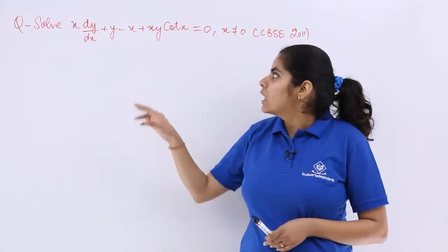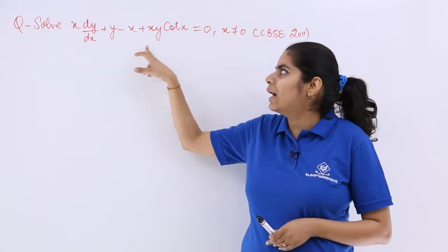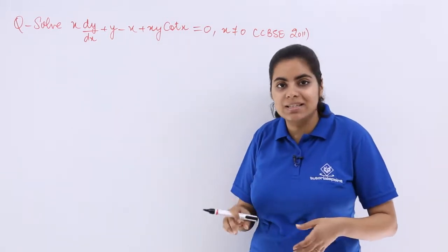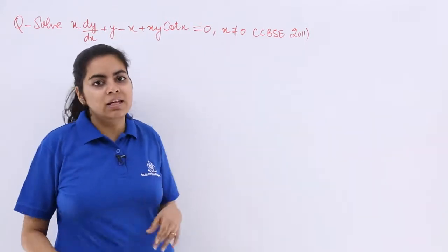The other thing, I see y here also, I see xy cot x means y is there which can be taken out as common. Let's start with the solution taking y as common and then let's move forward.